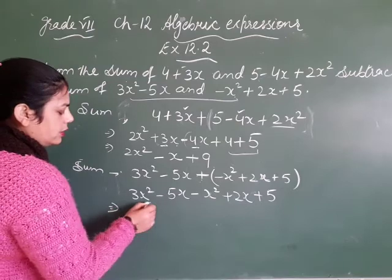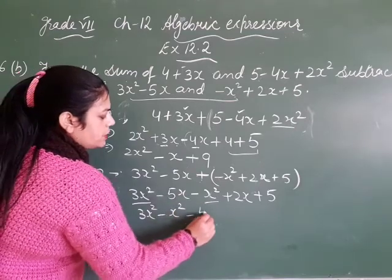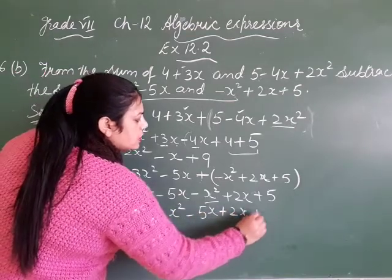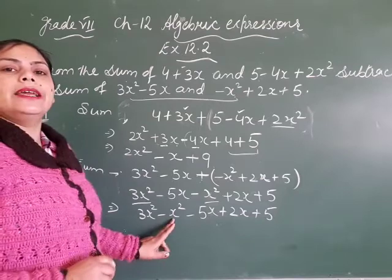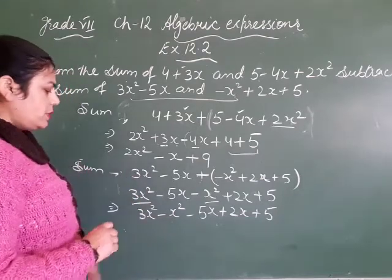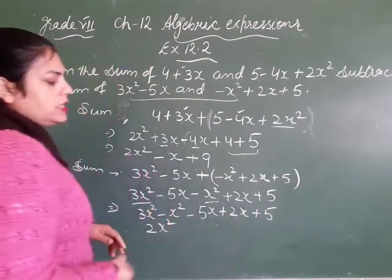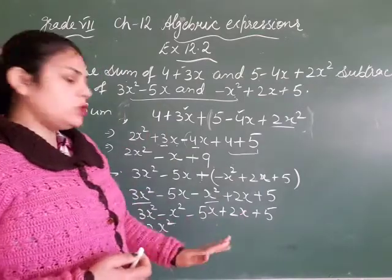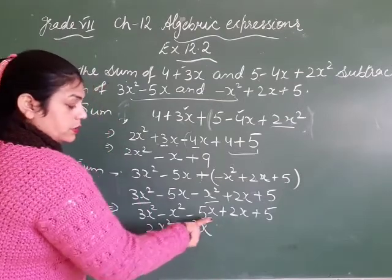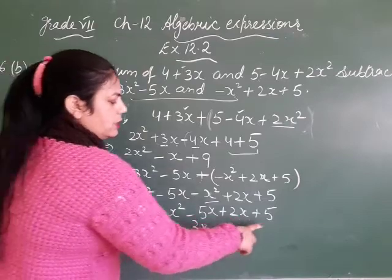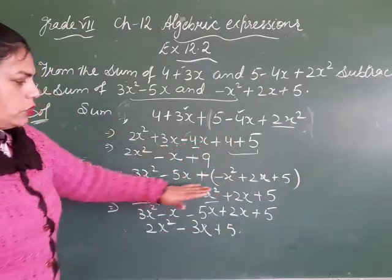Now we collect the like terms: 3x² minus x² (i.e., 3 minus 1 = 2, so 2x²), then -5x plus 2x: minus 5 plus 2, opposite signs so subtraction — 5 minus 2 = 3, greater term negative, so minus 3x. Then plus 5. Hamara second sum aa gaya: 2x² - 3x + 5. Humne in dono expressions ko bhi add kar liya.